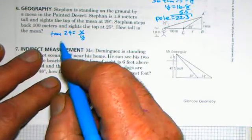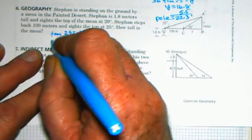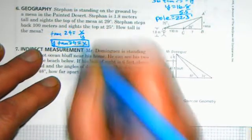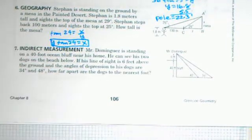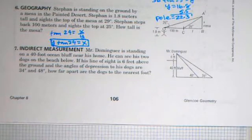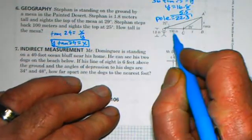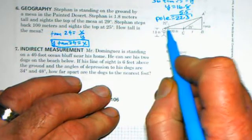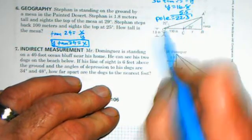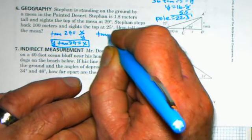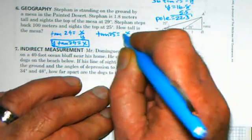We can get this into x equals form by multiplying both sides by y. Y times the tangent of 29 is equal to x, so that's what we can get from the first triangle as a relationship. Now he steps back 100 meters and takes another sighting, and now it's a 25 degree angle. The mesa is still the same height, but now the adjacent side is using this larger triangle is 100 plus y, and x is the height of the mesa. So opposite side is x, 100 plus y now is the adjacent side that goes with this larger triangle.